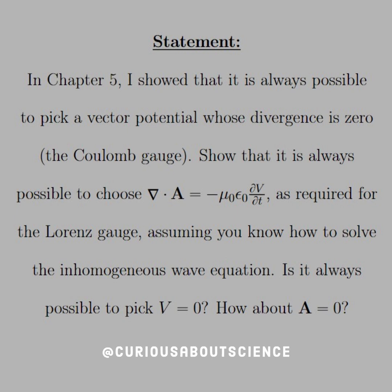In Chapter 5, I showed that it is always possible to pick a vector potential whose divergence is zero, i.e., the Coulomb gauge. Show that it is always possible to choose the divergence equal to negative mu naught epsilon naught dV/dt, as required for the Lorenz gauge.